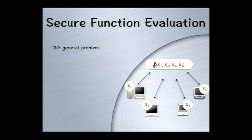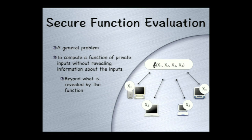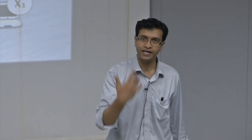Both of these are instances of a general problem called secure function evaluation. To abstract it: there are a bunch of parties with private inputs x1 to xn, and a publicly known function f which they want to compute on their inputs. You want to compute f on private inputs without revealing any information about those inputs — they do want to learn the output, but nothing beyond what is revealed by the output itself.